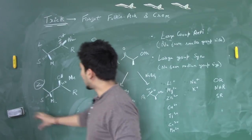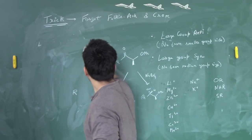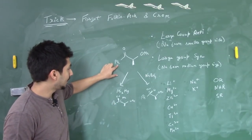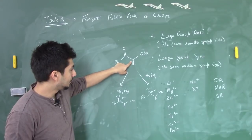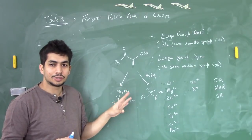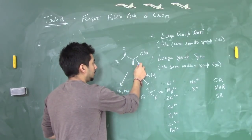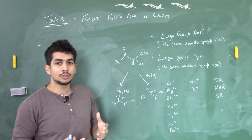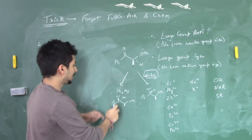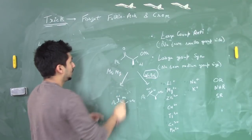Now let's take a worked example from Clayden. We have a phenyl group attached to the carbonyl carbon, a methyl group above the plane, and an OMe group in the plane. Since methyl is above the plane and OMe is in the plane, hydrogen is below the plane. We'll compare two reagents: sodium borohydride (NaBH4) and dimethylmagnesium (Me2Mg).